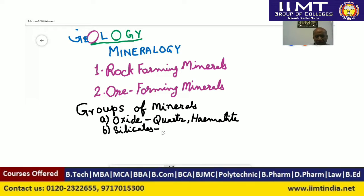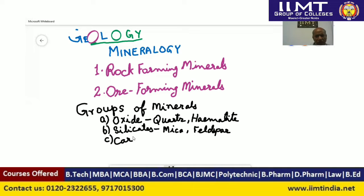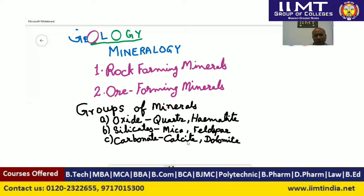The next group of minerals is silicates. Mica and feldspar are examples of silicate minerals. The next group is carbonates — calcite and dolomite are minerals available in the carbonate group.